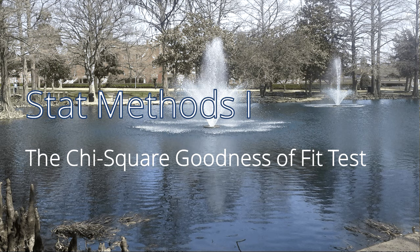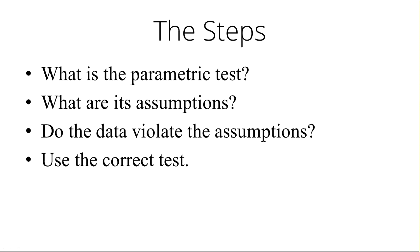And again, it's categorical outcomes. So that looks familiar here. Parametric test is called the Chi-squared goodness of fit test.